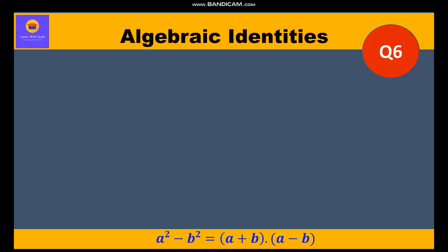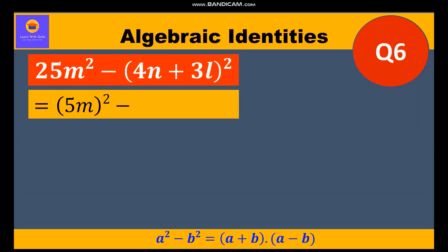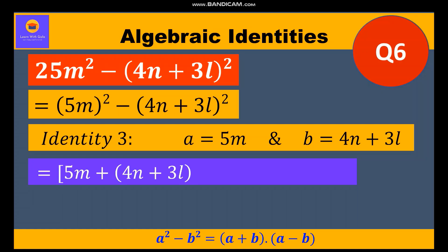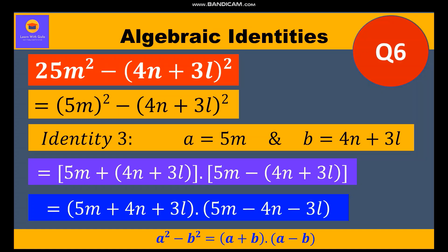Now let's move to the sixth question: 25m² - (4n + 3l)². We write 25m² = (5m)² minus the whole square of (4n + 3l). This is Identity 3 where a = 5m and b = (4n + 3l). Substituting, we get two factors: (5m + 4n + 3l) and (5m - 4n - 3l), after opening the brackets and changing signs.